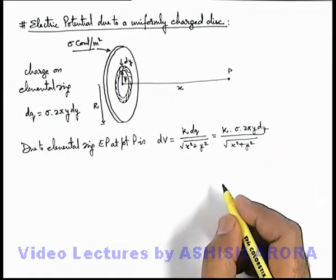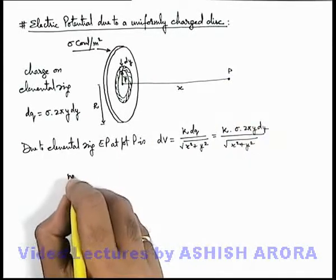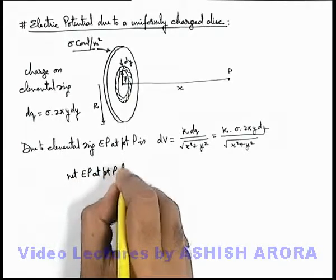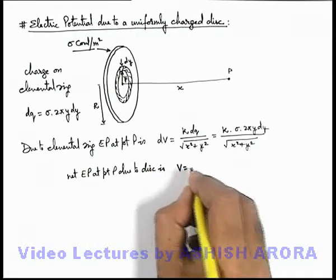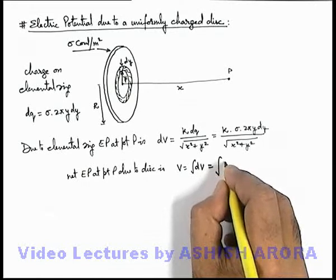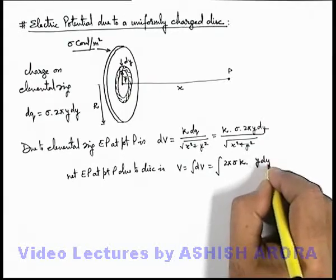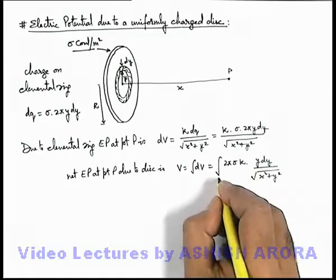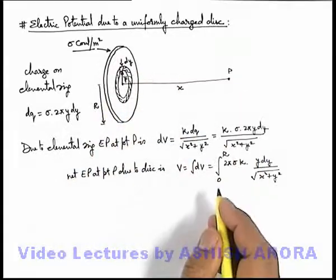Total electric potential at P: we calculate by integration, net electric potential at point P due to disc. This is the integration of dV, which is 2π sigma k y dy upon root of x² plus y². Limits of integration for y are from zero to r for the whole disc.